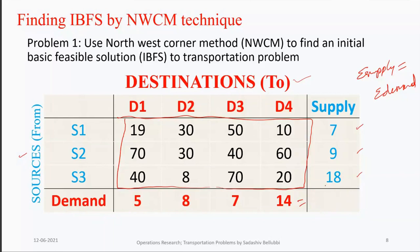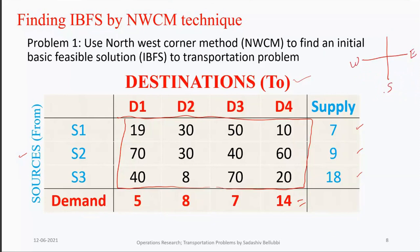Now we can proceed for the IBFS using the Northwest Corner Method. The summation of supply equals summation of demand, so the problem is balanced. In the northwest corner method, 'northwest' means the top-left element of the given matrix, and that is where we start the allocation.